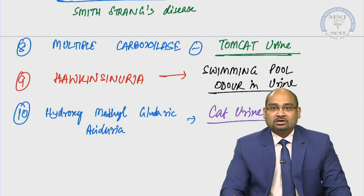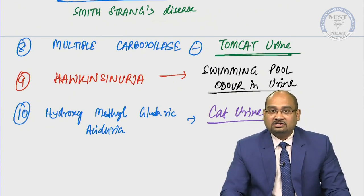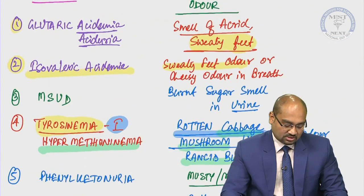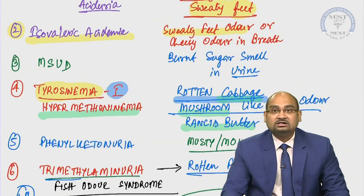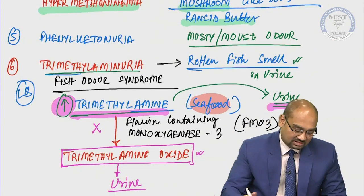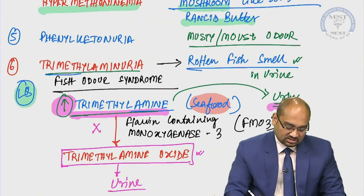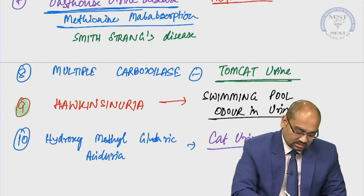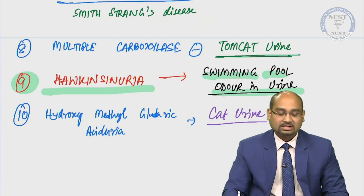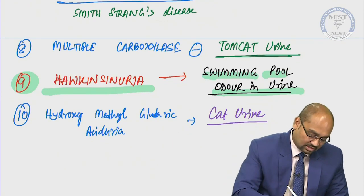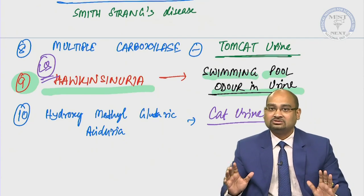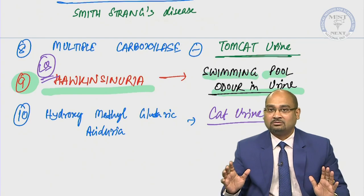These are the abnormal odors associated with different metabolic defects. Let us do a quick recap: isovaleric aciduria, glutaric aciduria, maple syrup urine disease, tyrosinemia type 1, hypermethioninemia, phenylketonuria, trimethylaminuria — which is a latest exam question — and Hawkinsinuria, which has the classical swimming pool odor in urine — also a recent exam question. These are the abnormal odors associated with various inborn errors of metabolism. Thank you.